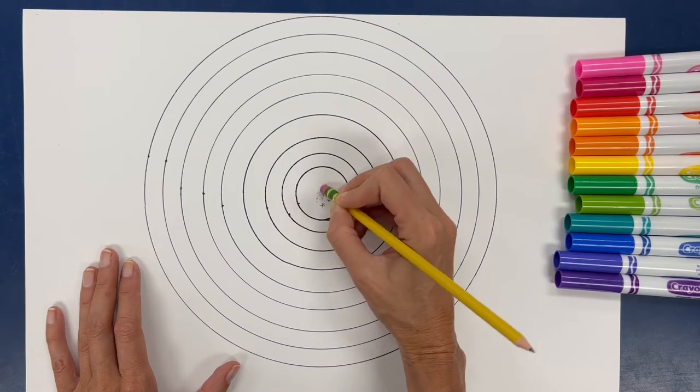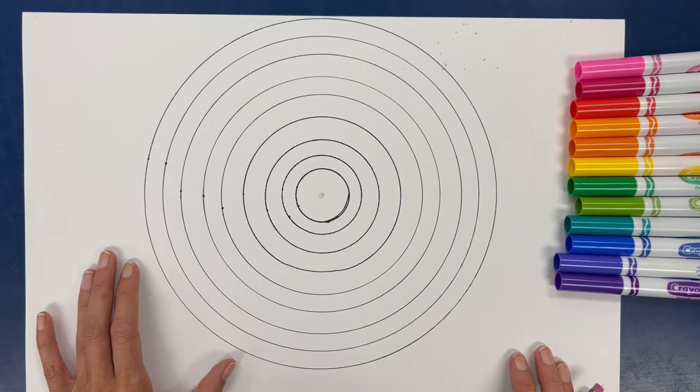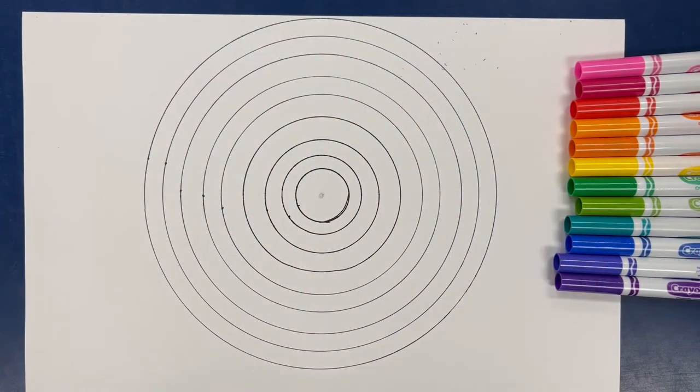I'm going to erase this little center circle that was the center of all of our circles, and our next step is to add the fish that are going to go on top of our concentric circles.